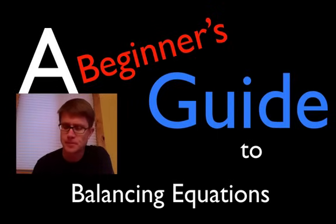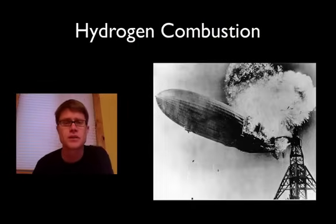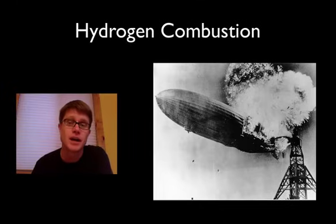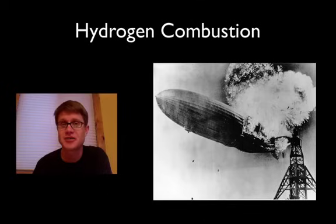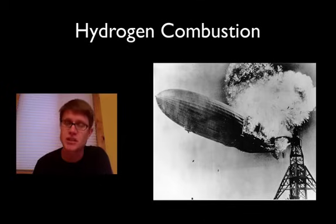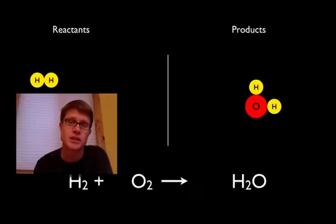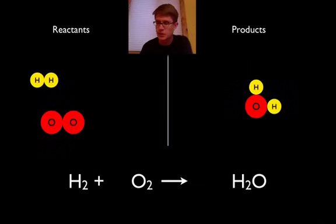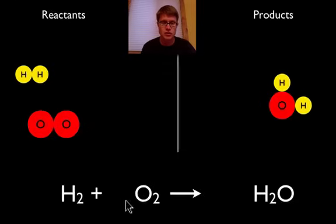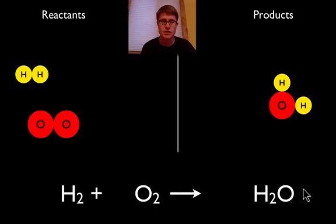So let's get started. The first one we're going to talk about is the combustion of hydrogen. This is the Hindenburg explosion — after this, we quit putting hydrogen gas into blimps for obvious reasons. Essentially what happens is hydrogen combines with oxygen. The equation is H2 plus O2 yields water, or H2O, and we get a lot of energy out of there as well.